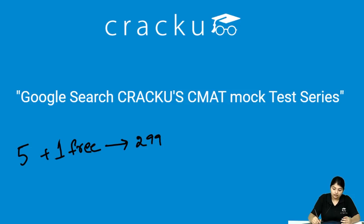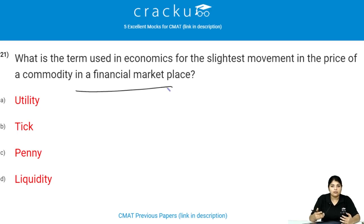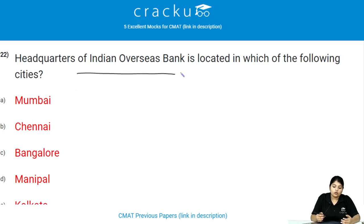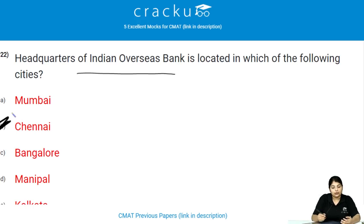What is the term used in economics for the slightest movement in the price of a commodity in the financial marketplace? Tick is the term used. The headquarters of Indian Overseas Bank is located in Chennai, Tamil Nadu, and its tagline is 'Good people to grow with.'